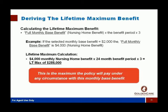The only thing that limits the plan is a lifetime maximum benefit, and your software calculates it easily. It's very simple math: the lifetime maximum is the full monthly nursing home benefit times the benefit period you chose (6, 12, 18, or 24 months) times 3. The number 3 is a fixed number we put together to make this plan affordable and powerful at the same time. For example, a $2,000 home health care base benefit pays $4,000 for nursing homes, so the lifetime maximum would be $4,000 × 24 months × 3 = $288,000.